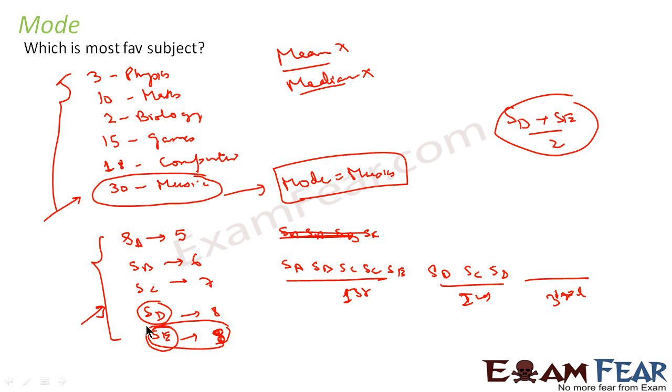So in case of mode - in case of median we have seen when n is equal to even, we used to find n by 2 and n by 2 plus 1, and we used to add this and divide by 2 to find the average median. But in case of mode, we don't find average mode. Average mode is a no-no.